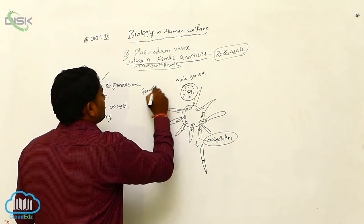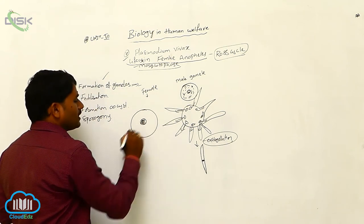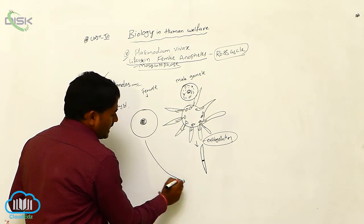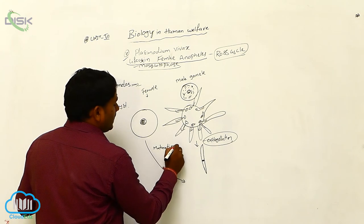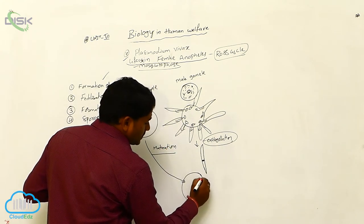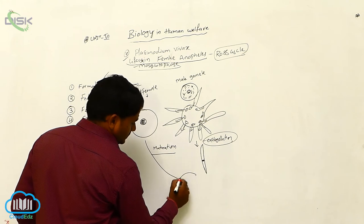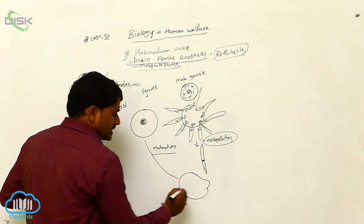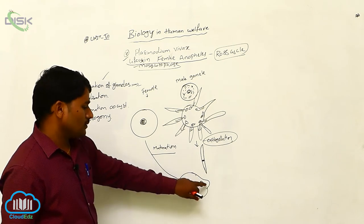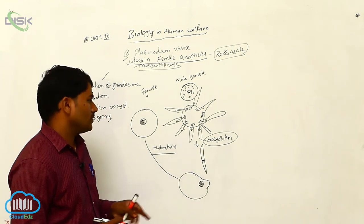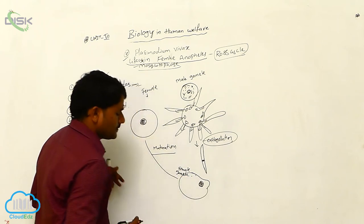Formation of female gamete: the female gametocyte is large in size and does not show any division. It undergoes the process called maturation. There is a development of a cone-like structure, and the nucleus moves towards that cone-like structure. This is called the fertilization cone. By maturation, the female gamete is formed.